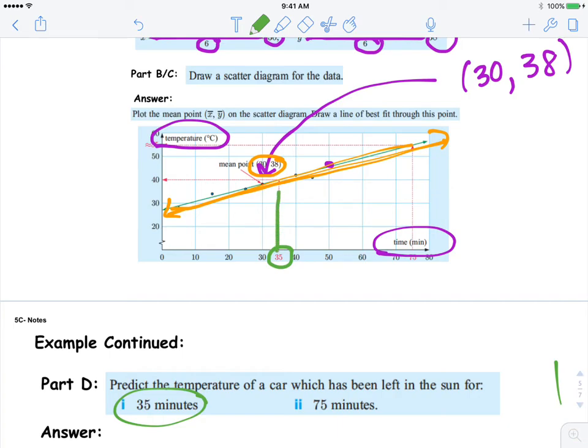Go vertically up to that orange line where it touches, and then go horizontal and read what that number is. So it's predicted that if you have 35 minutes, the temperature would be 40 degrees Celsius.